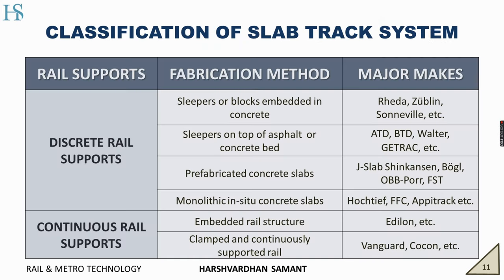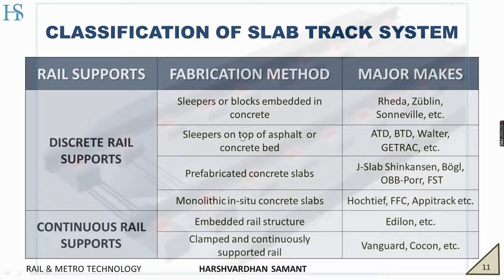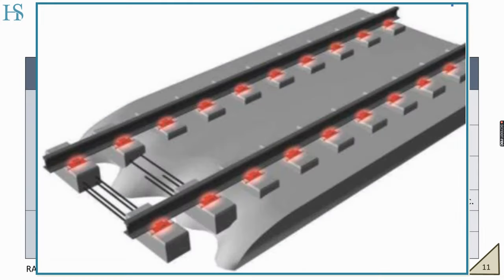Now, classification of the slab track system. Broadly it is classified into two systems: discrete rail supports and continuous rail supports, and the major makes are the patented methodologies of various companies. Going with the first, we will speak about sleepers or blocks embedded in concrete. Sleepers are cast into concrete through or directly on top of the concrete bed. It follows top-down track alignment. There is reduction of vibrations as the complete elastic isolation of the supporting blocks from the concrete slab is done. It is easy to exchange varying parts such as rails, fasteners, etc.